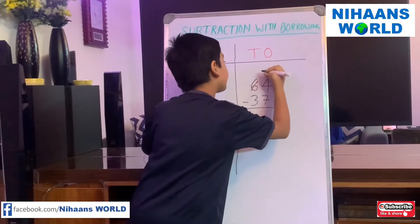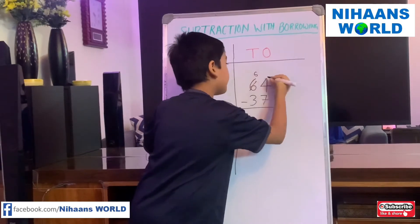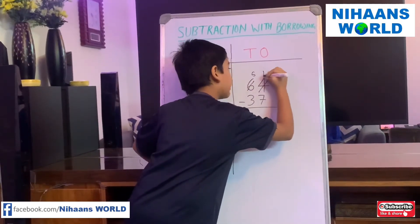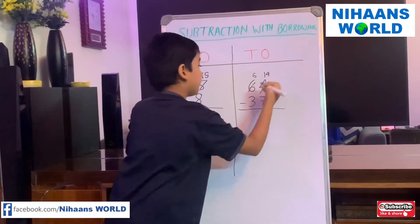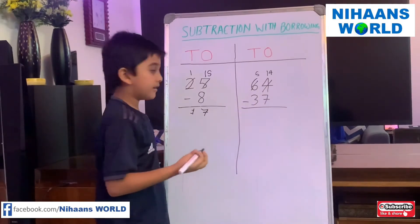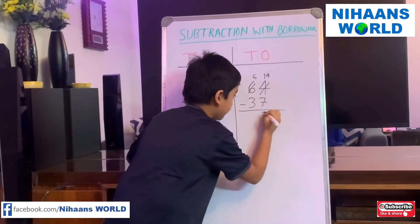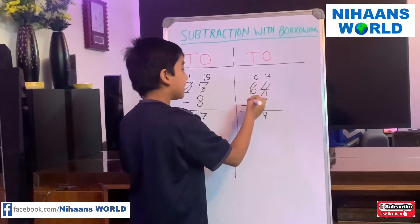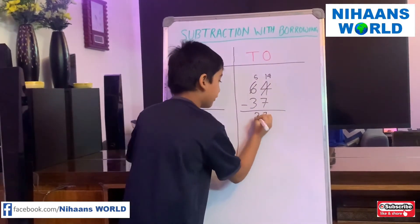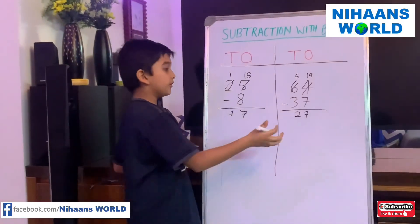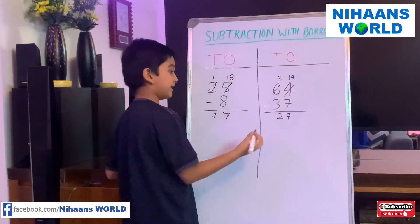6 becomes 5 and 4 becomes 14. 14 minus 7 is equal to 7, and 5 minus 3 is equal to 2. So we got the answer 27.